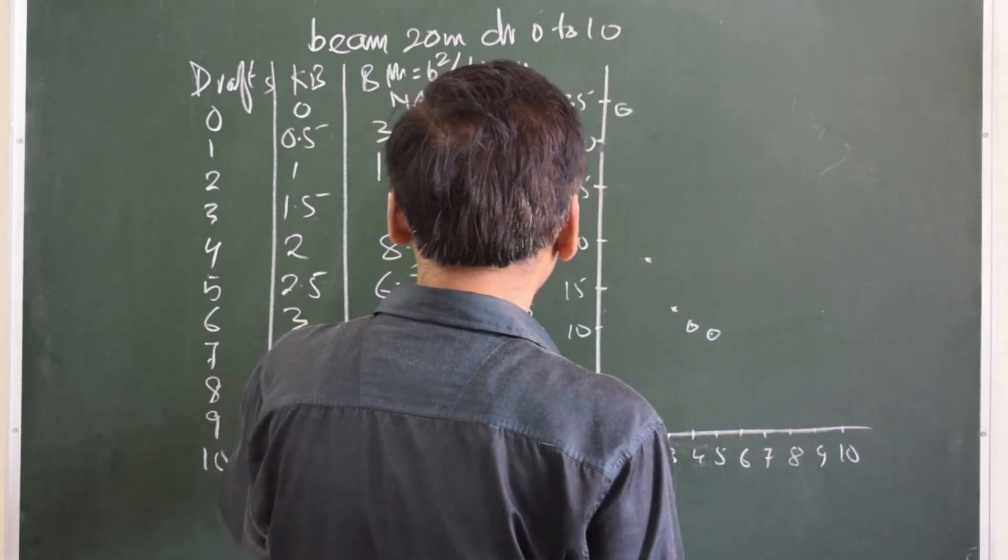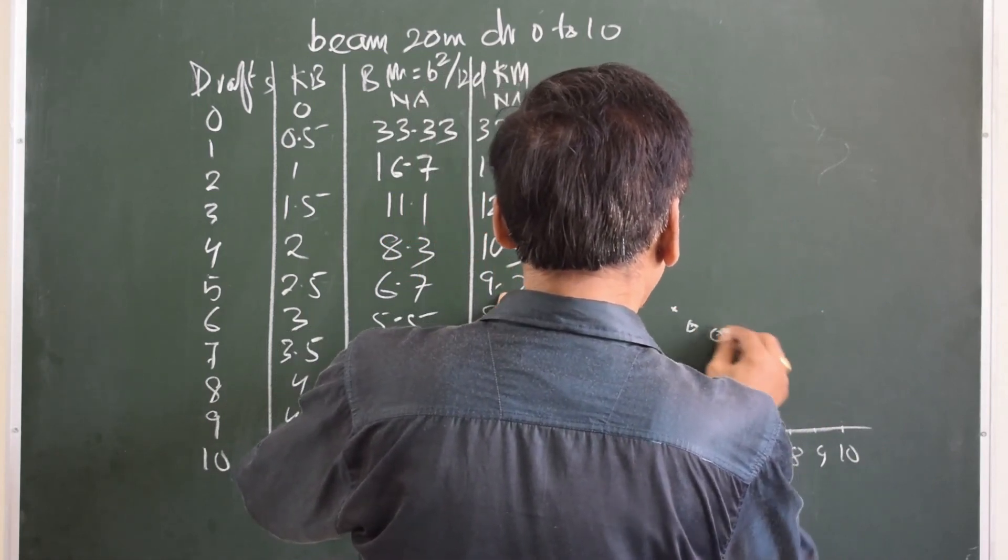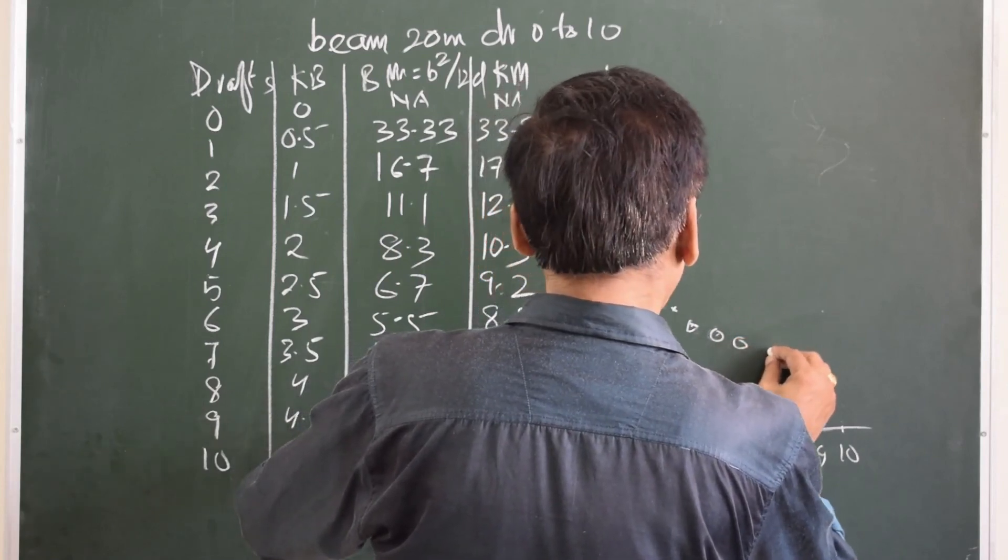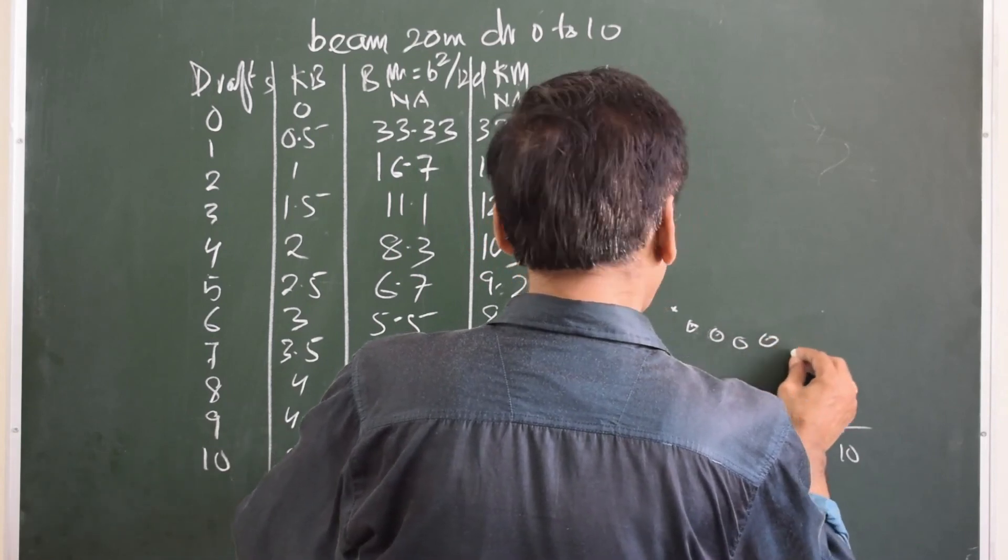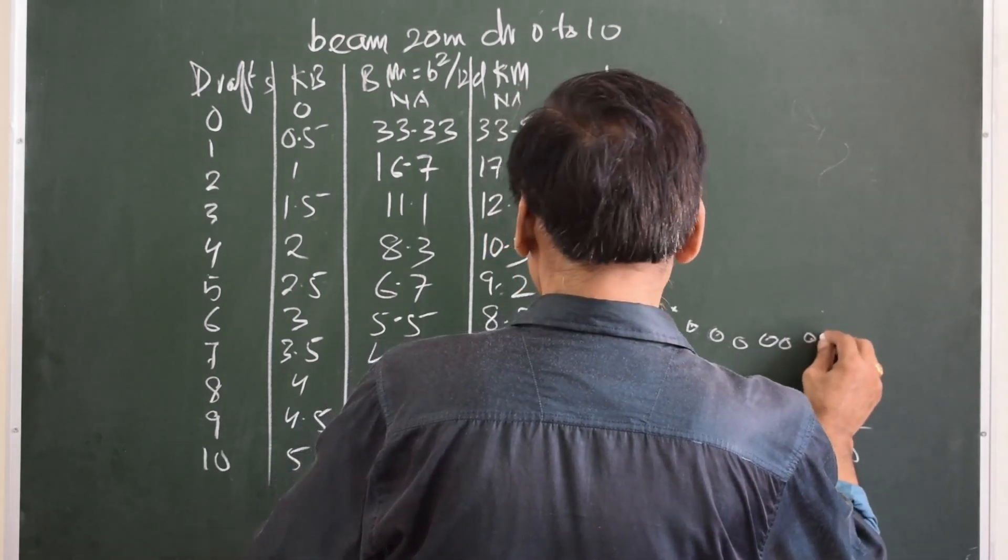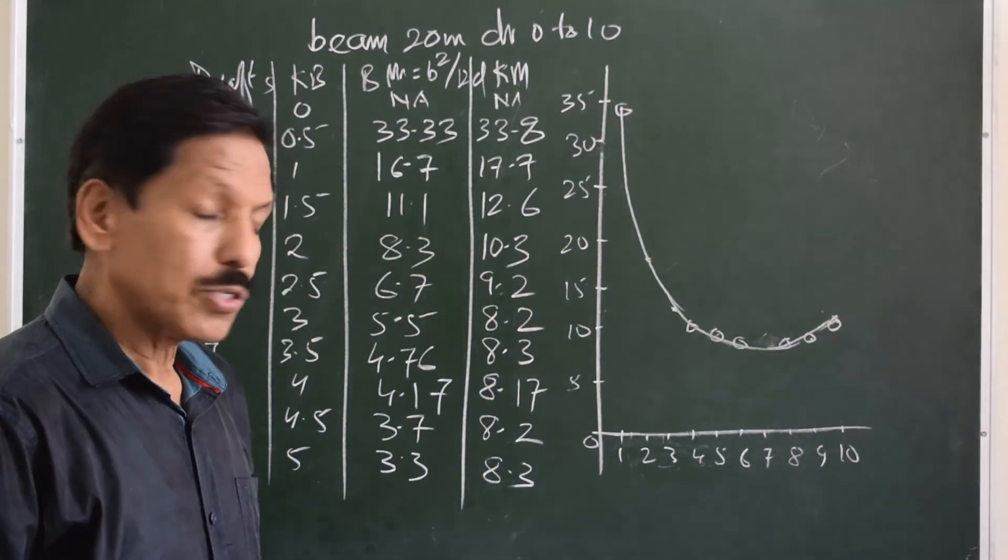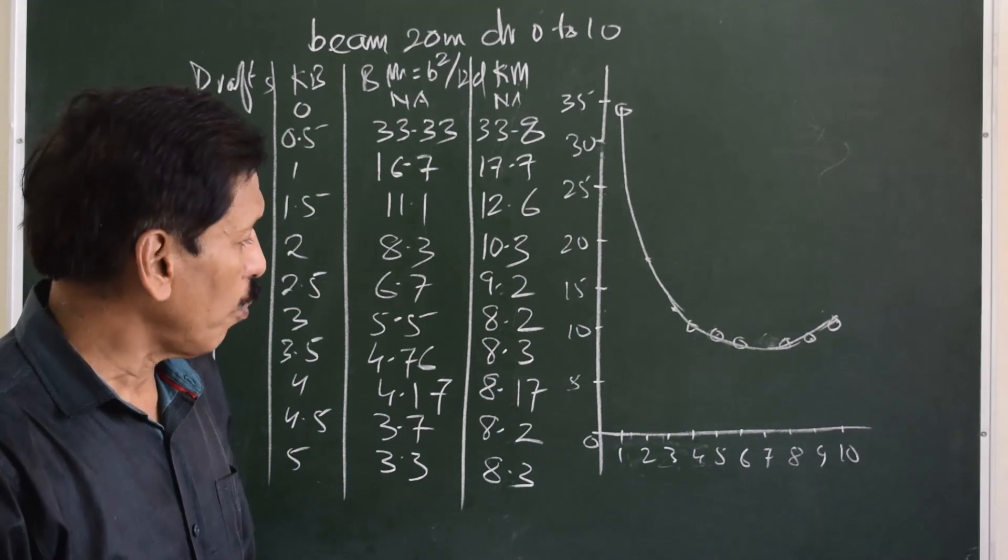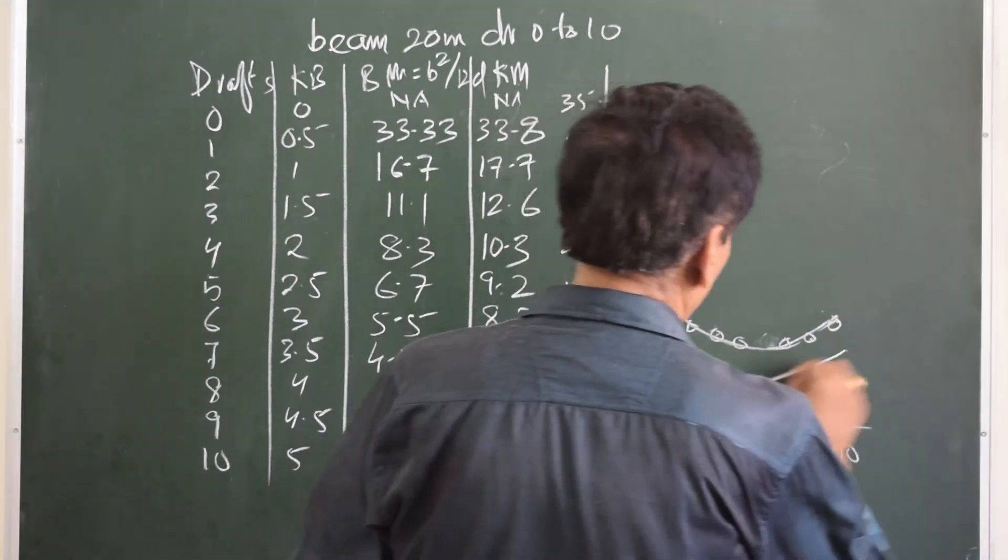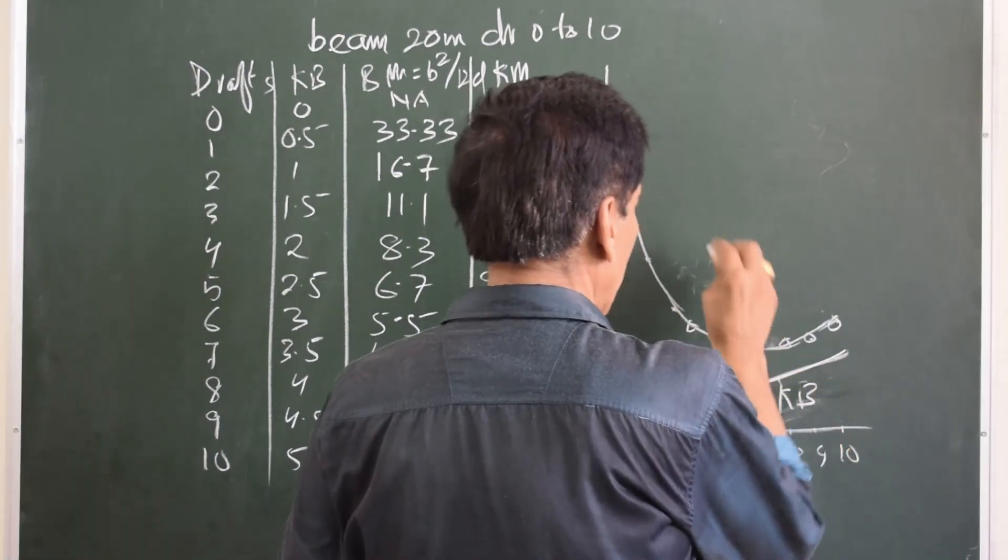So if we draw a graph whereby we plot the values - for 1 meter draft the KM is 33.8, for 2 meters draft the KM is 17.7, for 3 meters draft it is 12.6, for 4 meters draft it is 10.3, 5 meters draft it is 9.2, 6 meters draft it is 8.2, then 8.3, 8.17, 8.2, and 8.3. This is the position of metacentre above the keel drawn for a box vessel. If we want to draw a graph of KB, then probably it can be drawn like this - this is a graph for KB and this is a graph for KM.